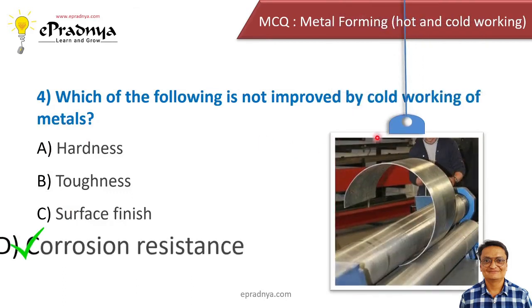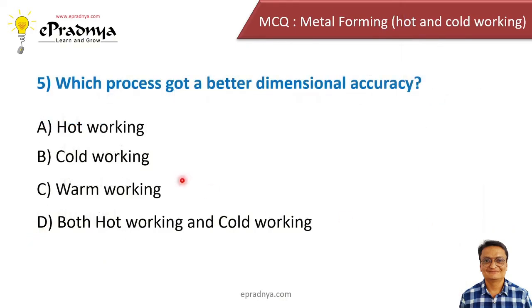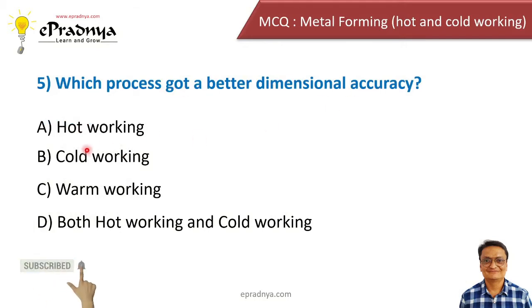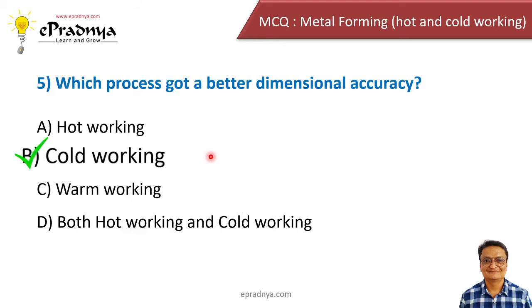We know that the cold working process is any metal forming process performed at room temperature. Fifth MCQ: Which process gives better dimensional accuracy? Options are hot working, cold working, warm working, and both hot and cold working. Cold working is the operation which gives you better dimensional accuracy.